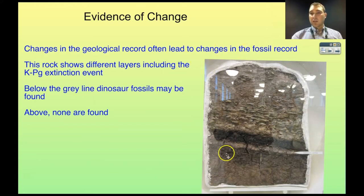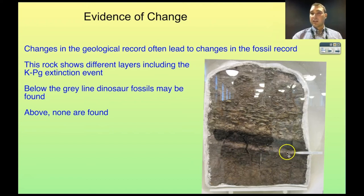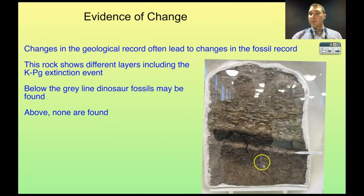Here's a picture I took in the American Museum of Natural History in New York — this is a layer through some rocks. There's a grey layer here. Below this grey layer you would find dinosaurs; above it you don't. This grey layer is the impact layer remaining from the KPG extinction event — the collision with something from space that killed off all the dinosaurs. Examples like this happen all the way through the fossil record — you see changes in species as time goes on, usually less complicated species below and more complicated species above.